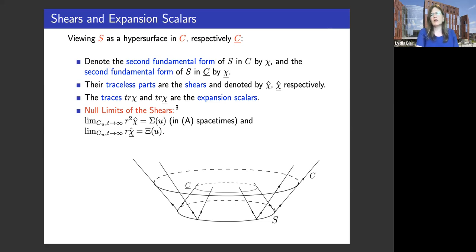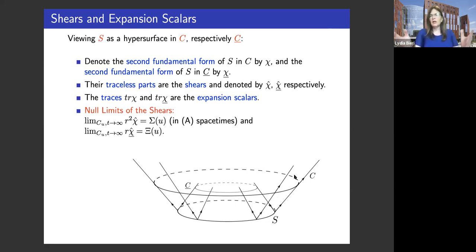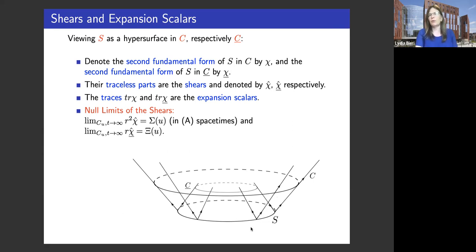I can write down what we call shears. I have the second fundamental form with respect to the outgoing and incoming null directions, denoted by chi and chi-bar respectively for the incoming. The traceless parts of these second fundamental forms are the shears, and they play an important role in describing gravitational radiation. The traces of these are the so-called expansion scalars. Typically the trace chi-bar is negative and the trace chi is positive; if the trace chi becomes negative, that gives you the characterization of a closed trapped surface, which is really important in black hole formation.